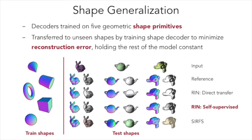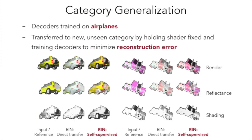We demonstrate our model on a few generalization tasks. After being trained on the ground truth intrinsic images for five geometric primitives, we freeze the reflectance and lighting decoders along with the shader. We then train the shape decoder to minimize reconstruction loss on a few more complicated classic test shapes. The model recovers these shapes and their corresponding shading images through this self-supervised learning. We achieve a similar result on the more difficult task of category generalization, transferring a model trained on only airplanes to one that can predict the intrinsic images of cars.